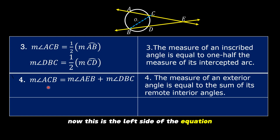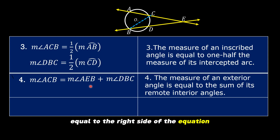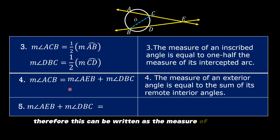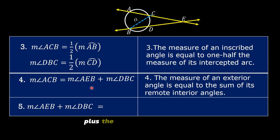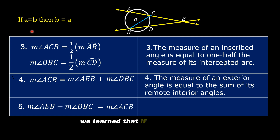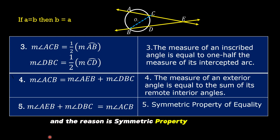Now, this is the left side of the equation and this is the right side. If the left side is equal to the right side, then the right side is equal to the left side. Therefore, the measure of angle AEB plus the measure of angle DBC is equal to the measure of angle ACB. In algebra, if A is equal to B, then B is equal to A. The reason is the symmetric property of equality.